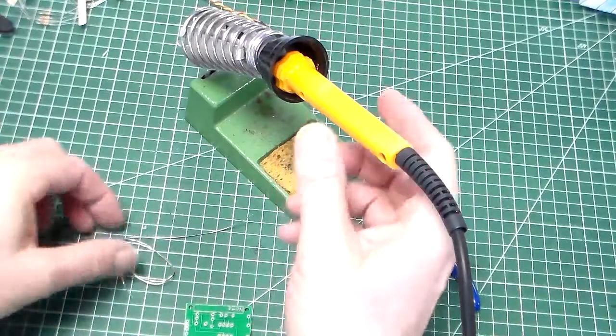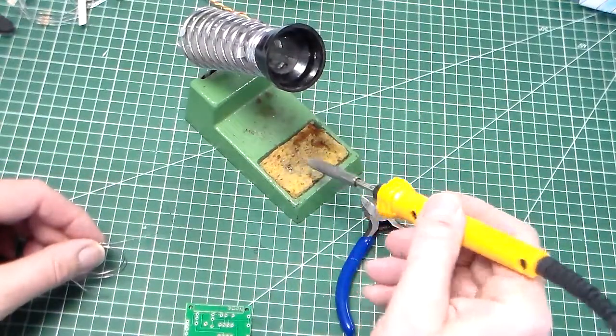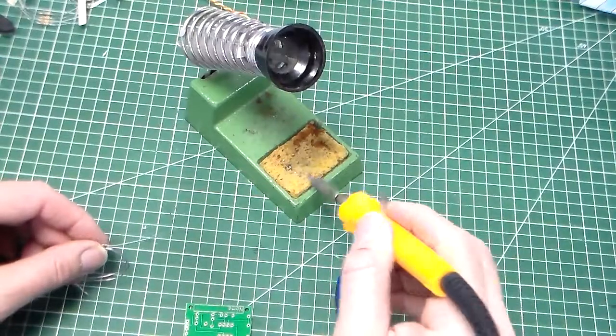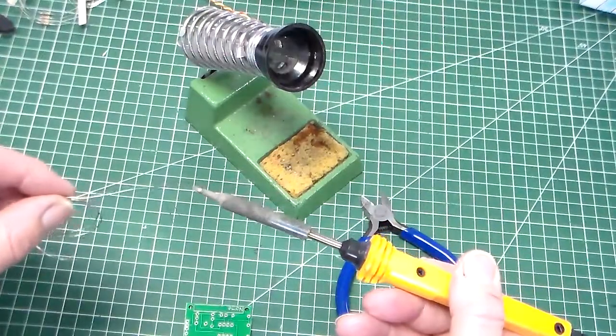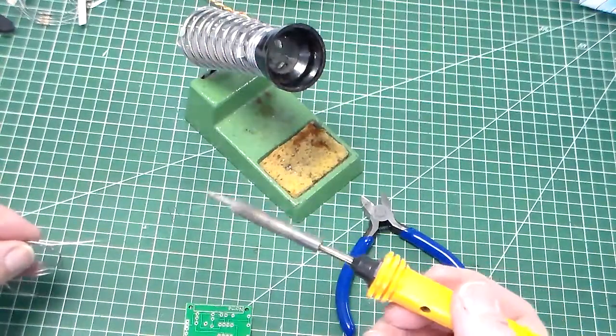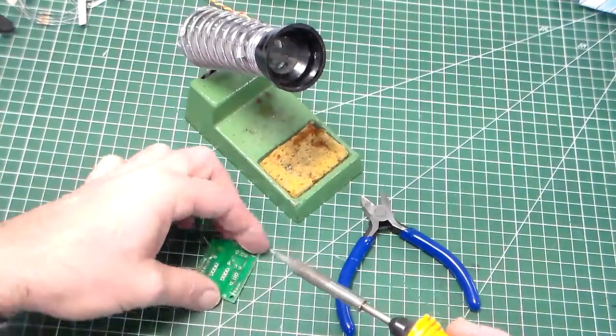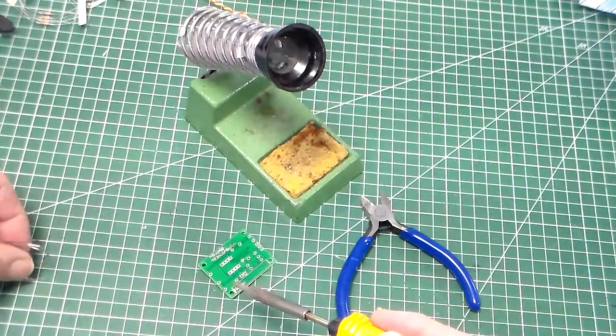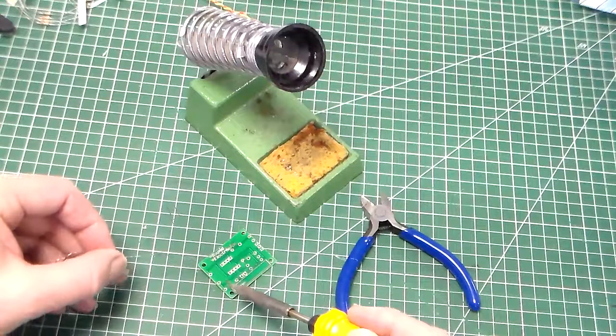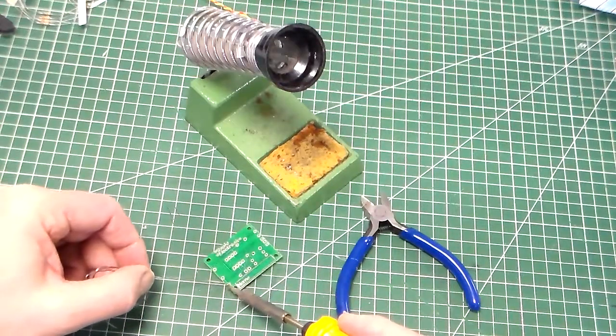Put our circuit board flat down. We get the soldering iron, clean the tip of the soldering iron. Don't push it onto the sponge too much because it does cool the tip down. We add a bit of solder, which is called tinning, and then we're going to solder the components on.